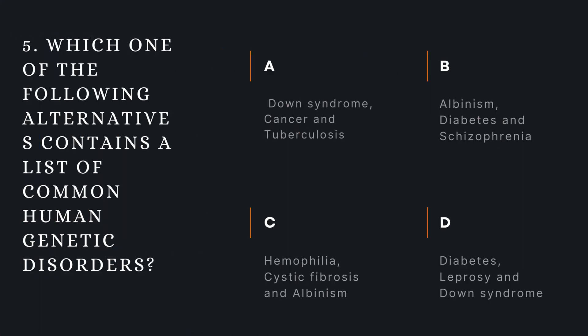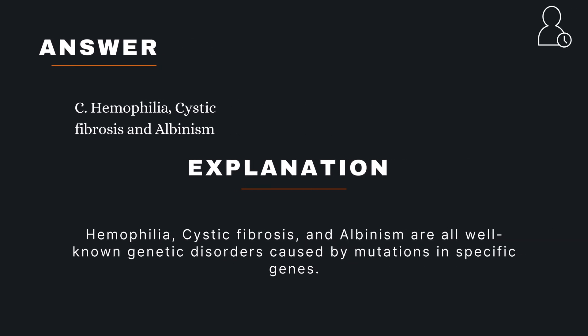Question 5. Which one of the following alternatives contains a list of common human genetic disorders? A — Down syndrome, cancer and tuberculosis; B — Albinism, diabetes and schizophrenia; C — Hemophilia, cystic fibrosis and albinism; D — Diabetes, leprosy and Down syndrome. The correct answer is C — Hemophilia, cystic fibrosis and albinism.